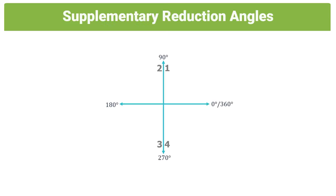Supplementary angles help us to create machines in each of the four quadrants that allow us to turn our ugly angles into pretty angles. We have 180 on the left and 360 on the right. Let's consider the second quadrant.